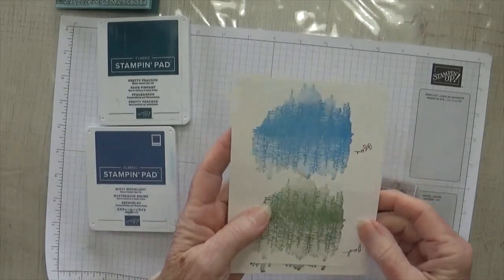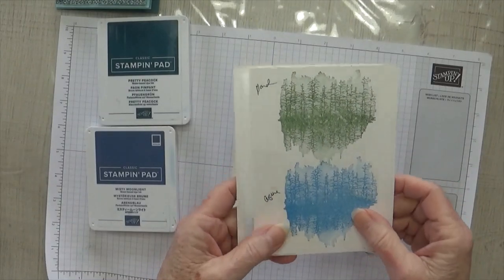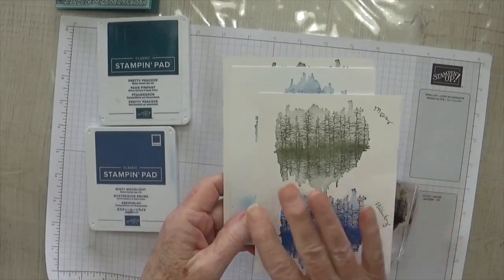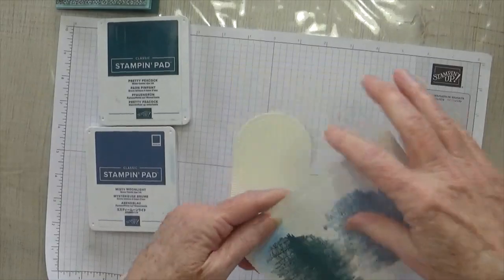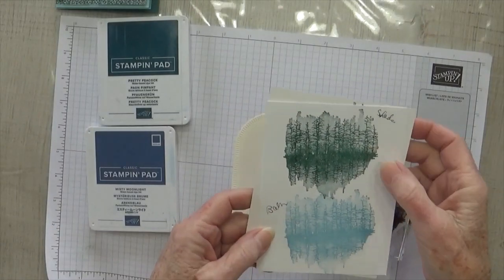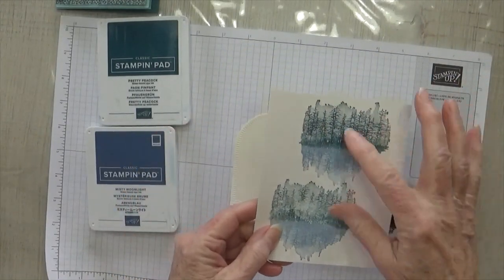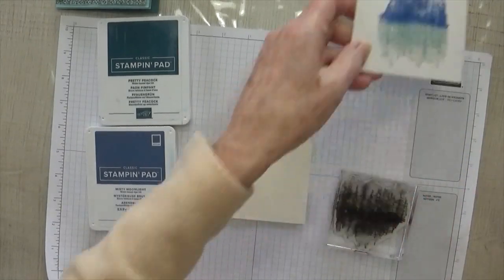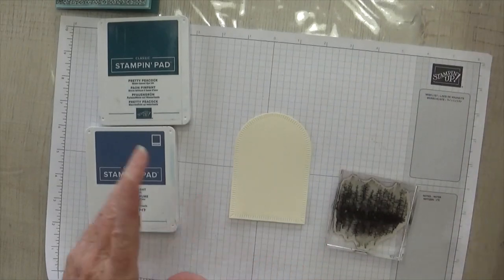Alright, here's where I tried just solid colors. This was garden green. This was azure afternoon. This was mossy meadow and blueberry bushel. So that's if you stamp it all in one color. Here is a boho blue. Pretty peacock, all one color, boho blue. And then shaded spruce and balmy blue. So then I started putting the two together. I don't even remember which colors these were. But as you see over here, I started getting darker and ended up settling on the pretty peacock and the Misty Moonlight.